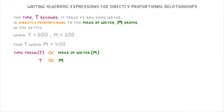Next, we're told that when T equals 600, M equals 200. Or in other words, it takes 600 seconds to boil 200 grams of water. And finally, the question is asking us to find T when M equals 450 — so to find the time it would take to boil 450 grams of water.